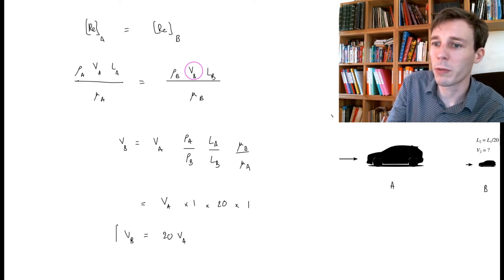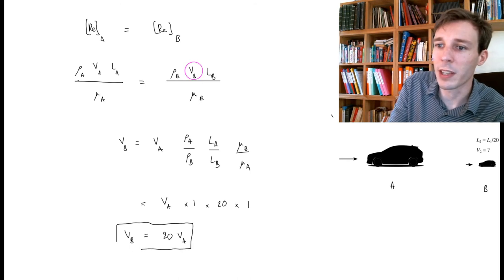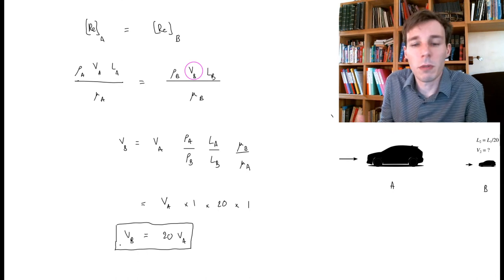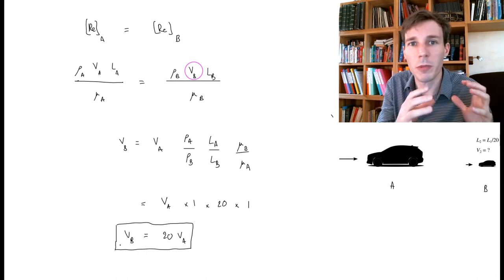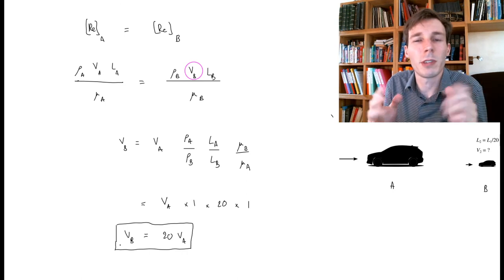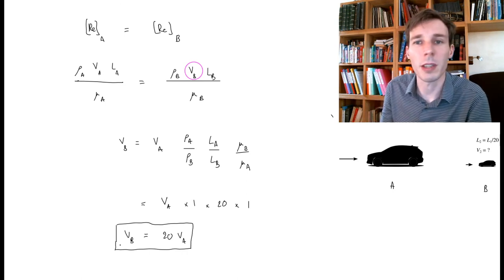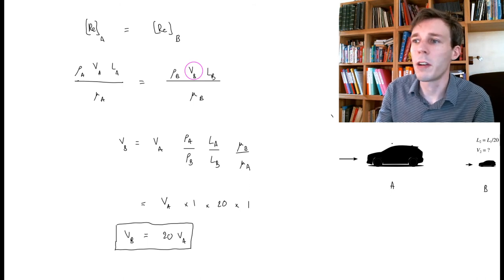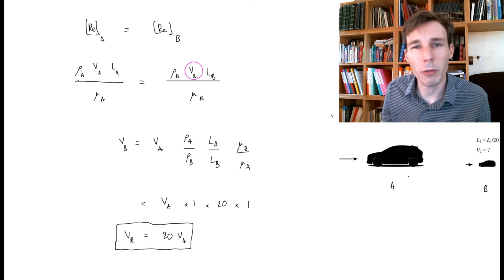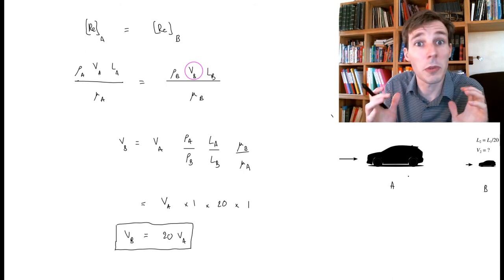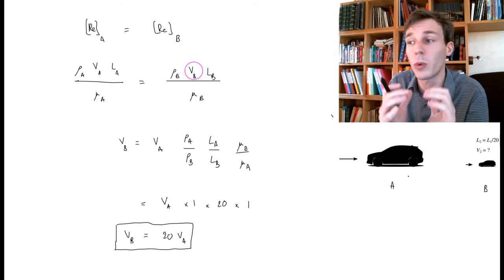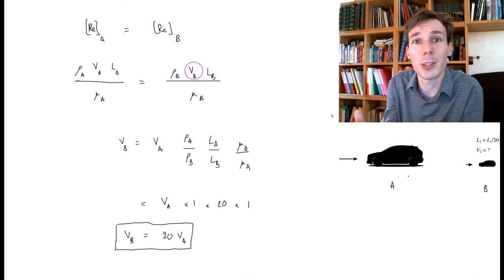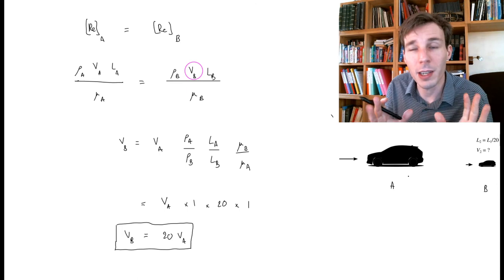Now this is quite a disappointing result because theory tells us it's very easy. If you want to reproduce the flow around an object with a model, then all you need to do is reproduce the same Reynolds number. And here you see that it's not that easy. If the real car goes at 100 km per hour and you want to reproduce that flow with a 1 to 20 model, you need to go 20 times faster. 20 times faster is 2,000 km per hour, and clearly this is not feasible.